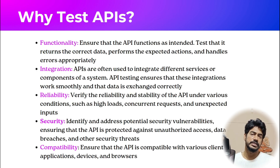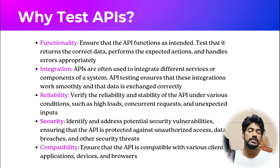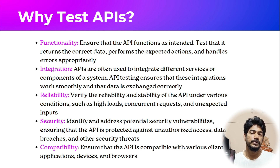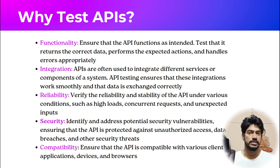So we know what an API is and where we see APIs in real life — but why should we test them? First, functionality testing: we need to ensure that an API functions as intended — that it returns the correct data, performs the expected actions, and handles errors appropriately. For example, if you ask me 'What's your name?' I should say 'My name is Kaushik,' not '28,' which is my age. We have to verify that whatever expected values we're requesting, we're getting the correct results and not irrelevant ones.